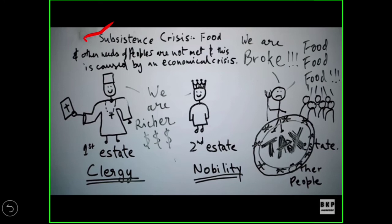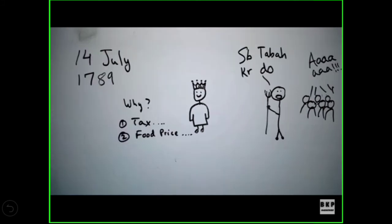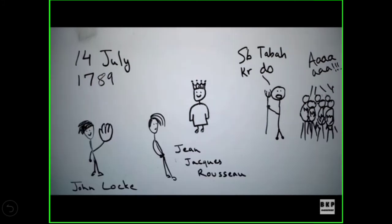Everywhere in the country there was scarcity of food, and above all the taxation was on top. Whatever the third estate people produced, they had to pay to the first estate as taxes. The condition in the country was becoming quite worse. And then in 14th July 1789, the three thinkers became quite active in the country.